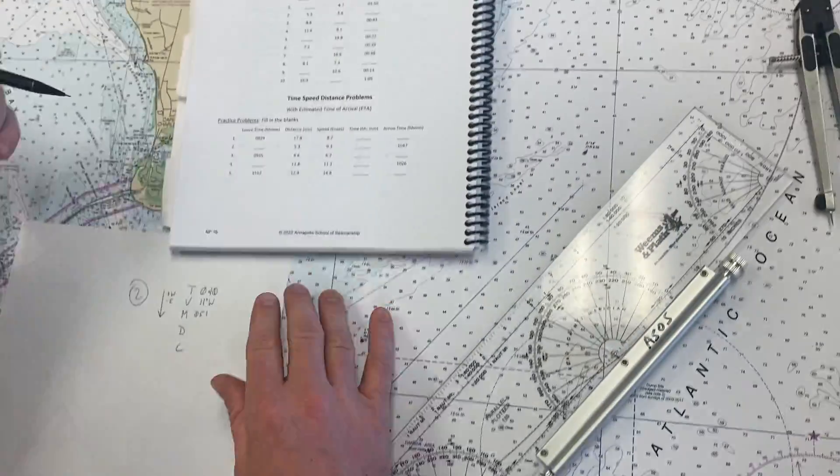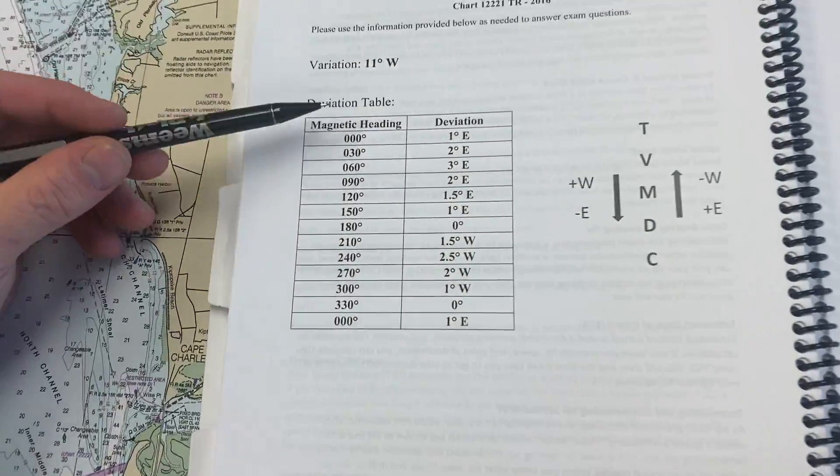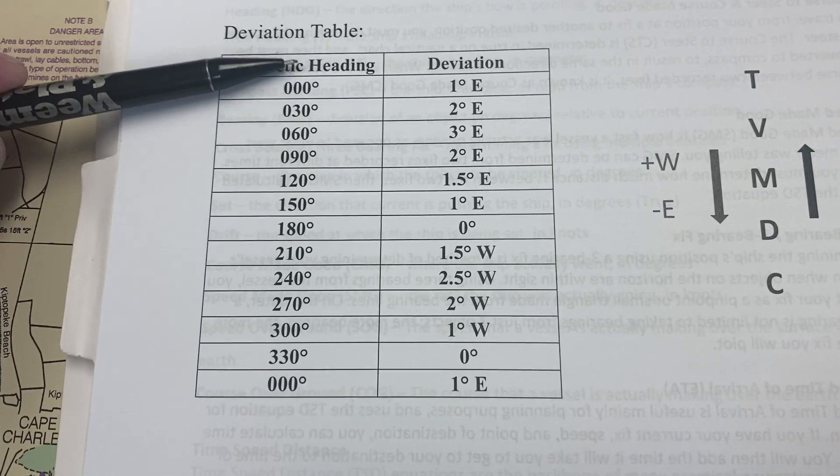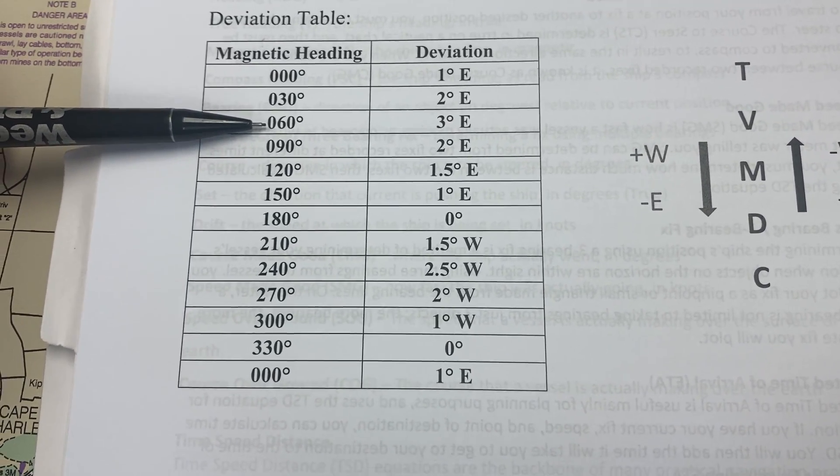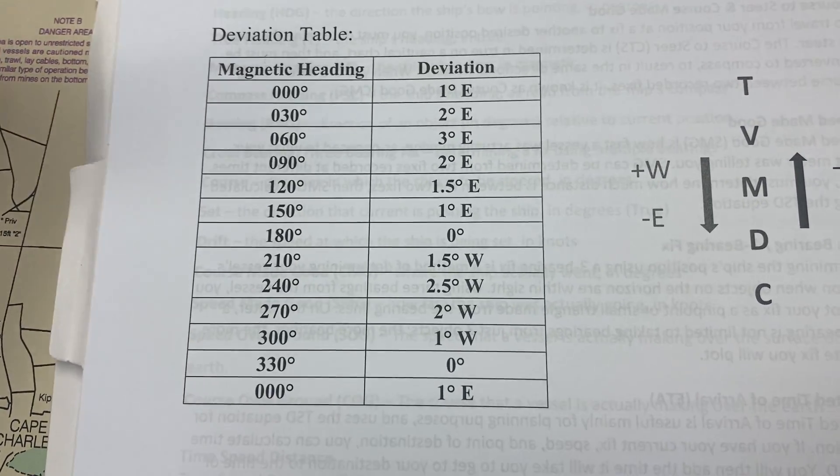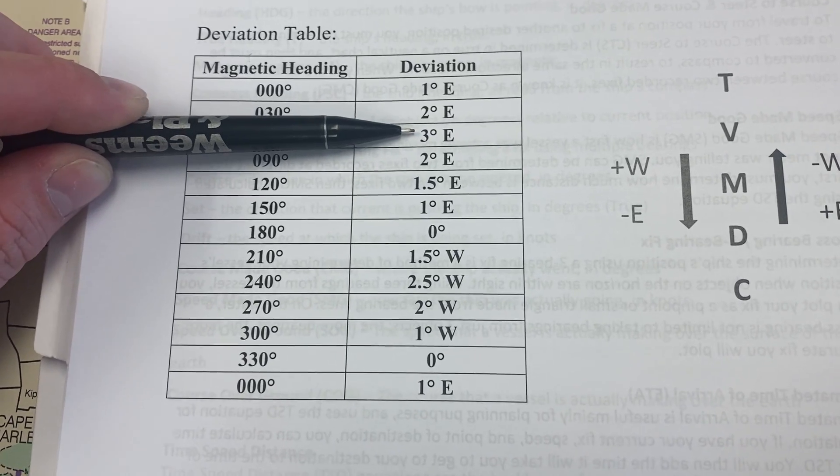So now we're going to go to our deviation table. The closest thing to 0, 5, 1 as I go down to the deviation table is our 0, 6, 0. So 0, 3, 0 is too low. 0, 9, 0 too high. 0, 6, 0 is the closest. So we're going to go with a 3 degrees east.